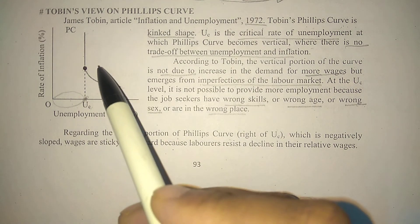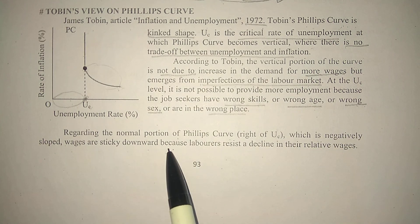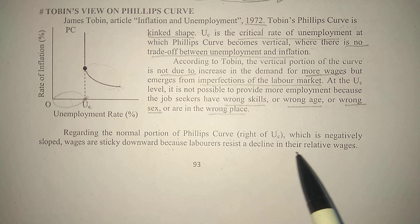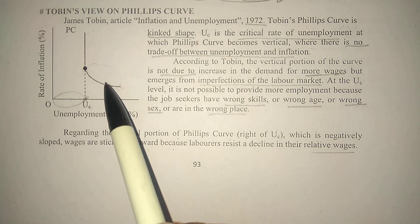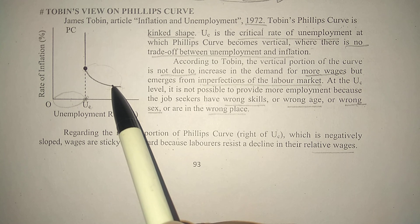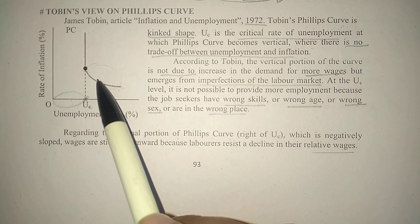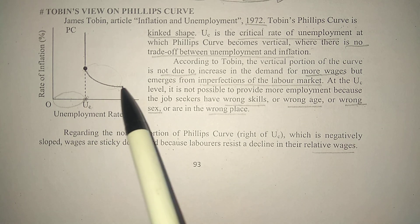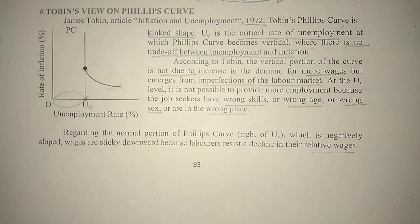Regarding the normal portion of the Phillips curve — the part which is negatively sloped — wages are sticky downward because laborers resist a decline in their relative wages. On this portion, just as explained in the second video on the introduction, the non-linear curve forms because the upward movement of wages is quick and rapid, but the downward movement is somewhat sticky. This is why this portion forms the way it does — the same reason that Phillips originally described. This was Tobin's view on the Phillips curve.